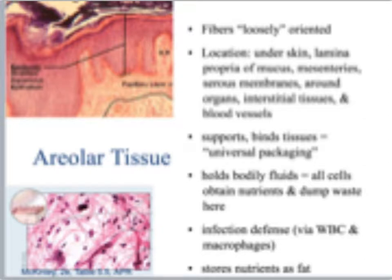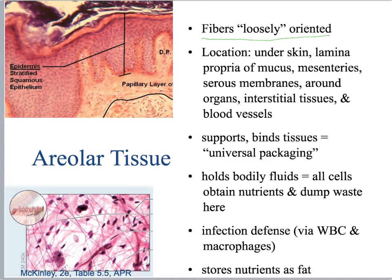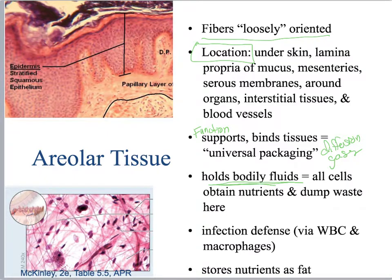To summarize areolar connective tissue: fibers are loosely oriented with lots of ground substance. You need to know the locations where it's found. Its basic functions include acting as a supportive structure, binding tissues, serving as packaging, providing a medium for nutrients and gases to diffuse, and storing body fluids. It also fights infection by providing a place for macrophages and other white blood cells to exist.